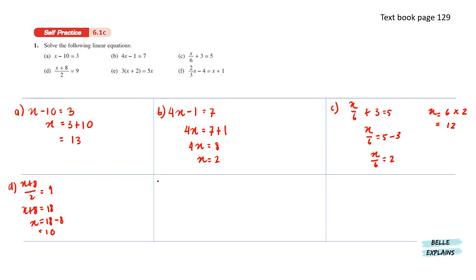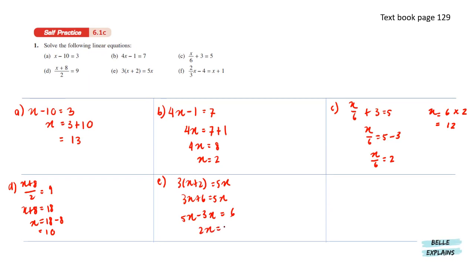3(x plus 2) equals 5x. Expanding the brackets gives us 3x plus 6 equals 5x. Gathering the x terms to one side gives us 5x minus 3x equals 6, so 2x equals 6, which means x equals 3.